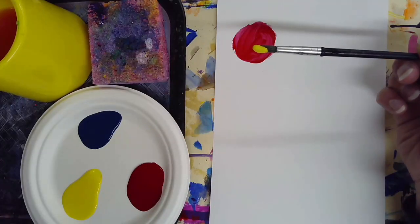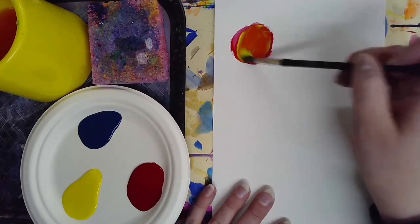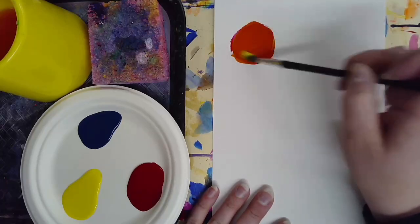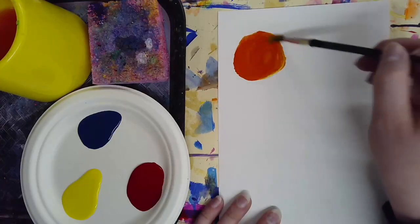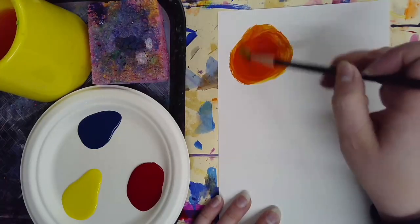Now I'm going to pick up some yellow and I'm gonna mix it in. You can see that the yellow and magenta together are creating orange.